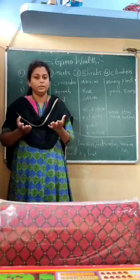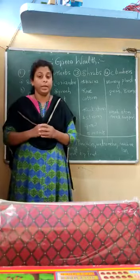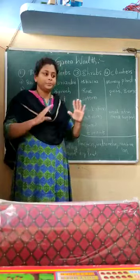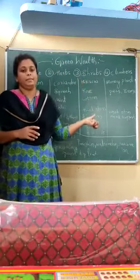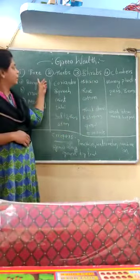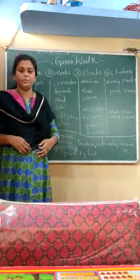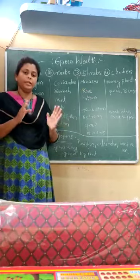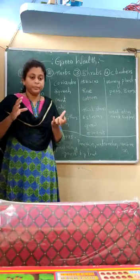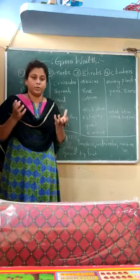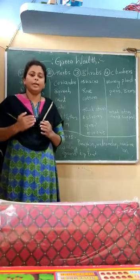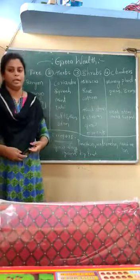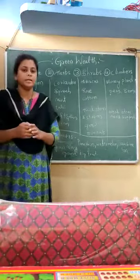So can we learn about all these plants in a systematic way, or do we just observe them randomly? We can learn systematically, because to avoid all this confusion, we have divided this green wealth into some types. The five types are: first, trees; second, herbs; third, shrubs; fourth, climbers; and fifth, creepers. Depending upon their nature, the thickness of their stem, their strength, and their growth, we have divided plants into these five types.